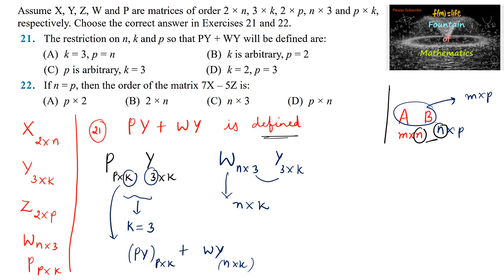Since addition is possible only when orders are the same, we conclude that P must equal N. So K equals 3 and P equals N. Among the options, K equal to 3 and P equal to N is the first option, so the first option is the right answer. Now let's see question 22.